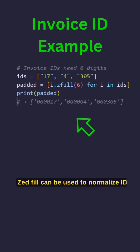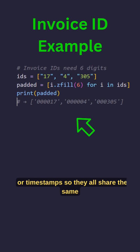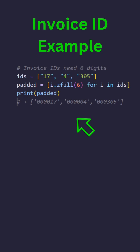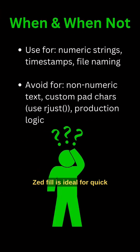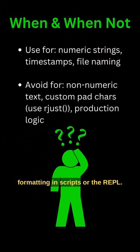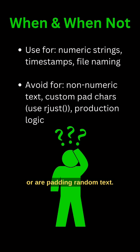z-fill can be used to normalize IDs, product codes, or timestamps so they all share the same width. It's ideal for quick formatting in scripts or the REPL. Avoid it if you need other fill characters or are padding random text.